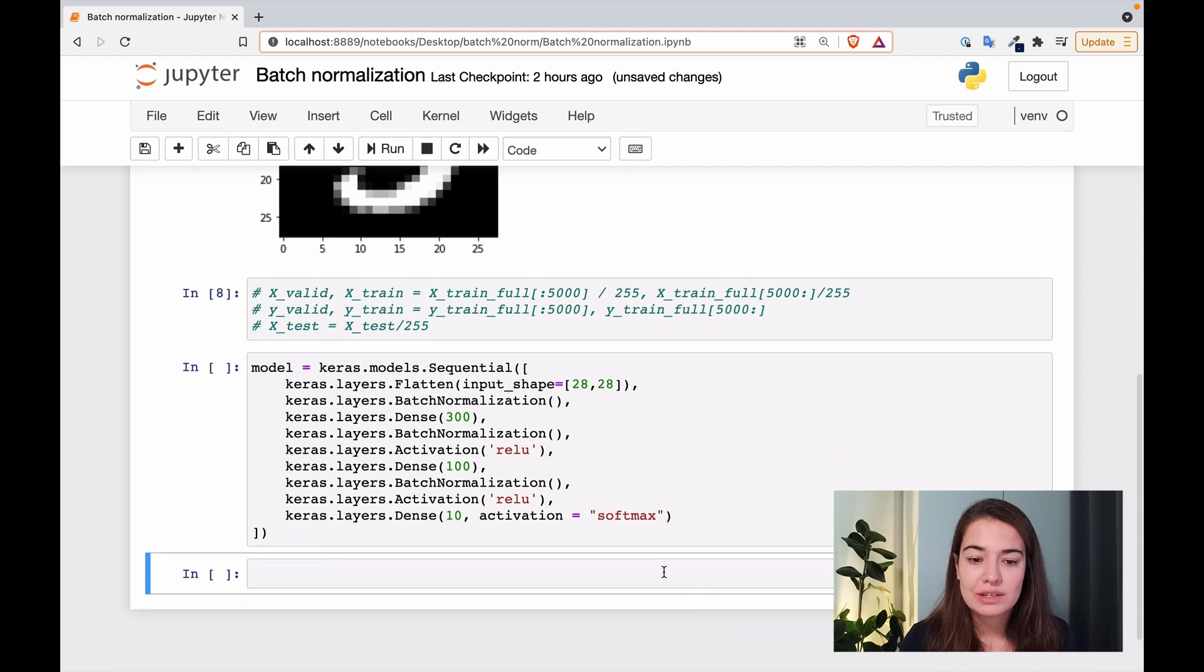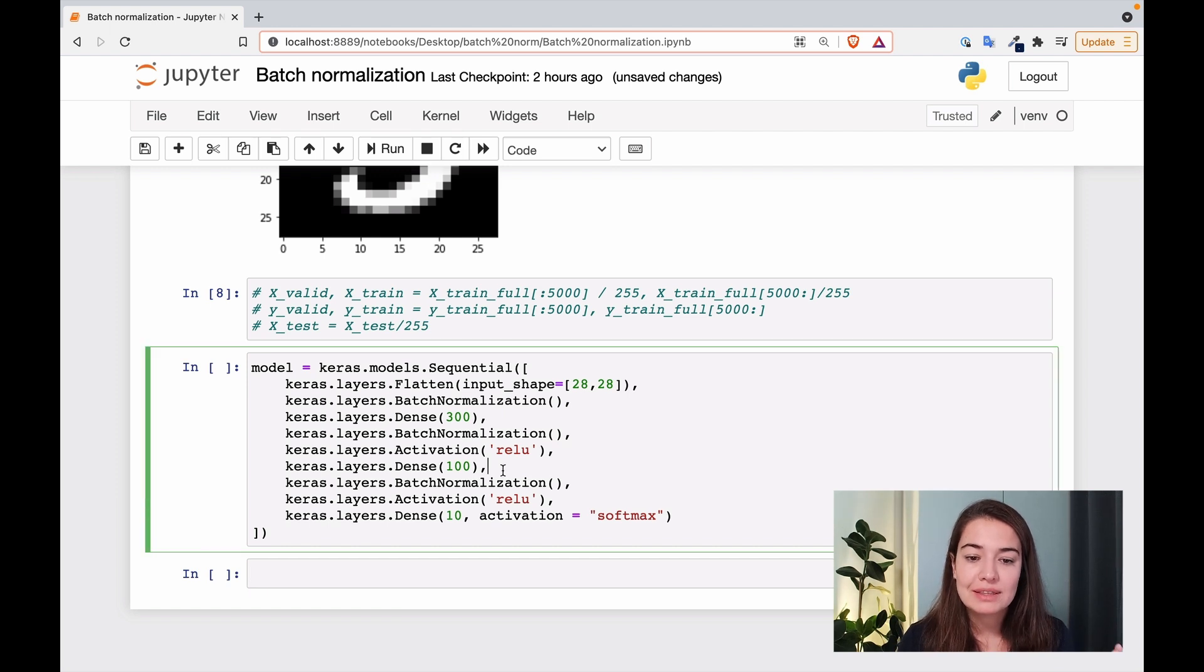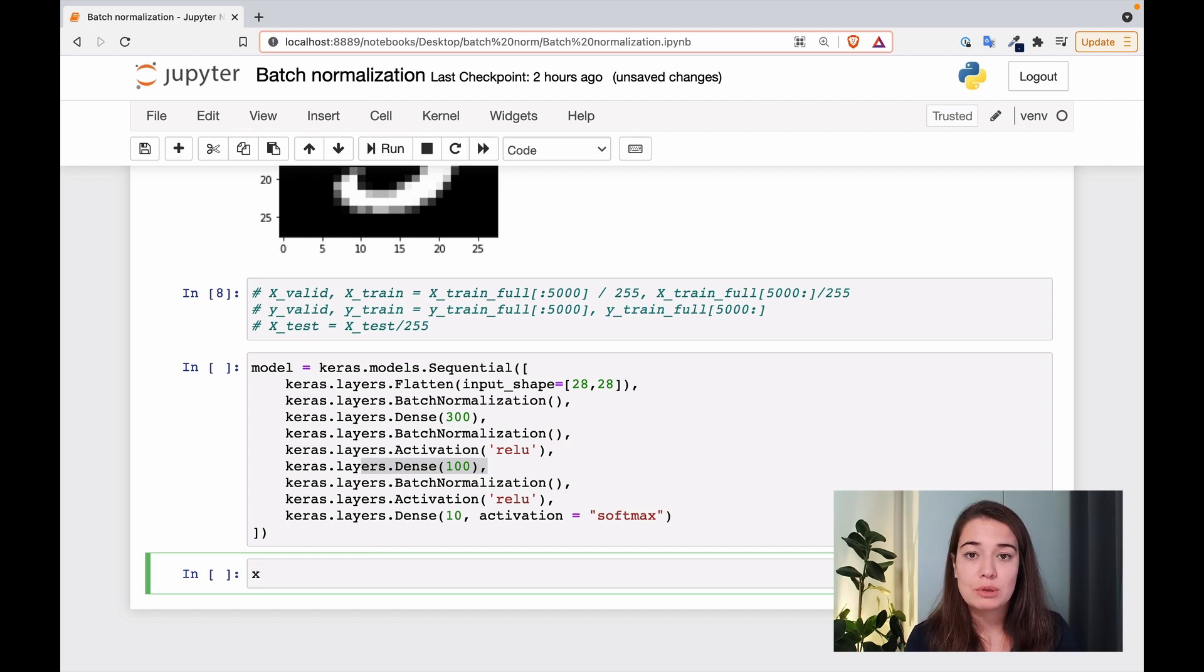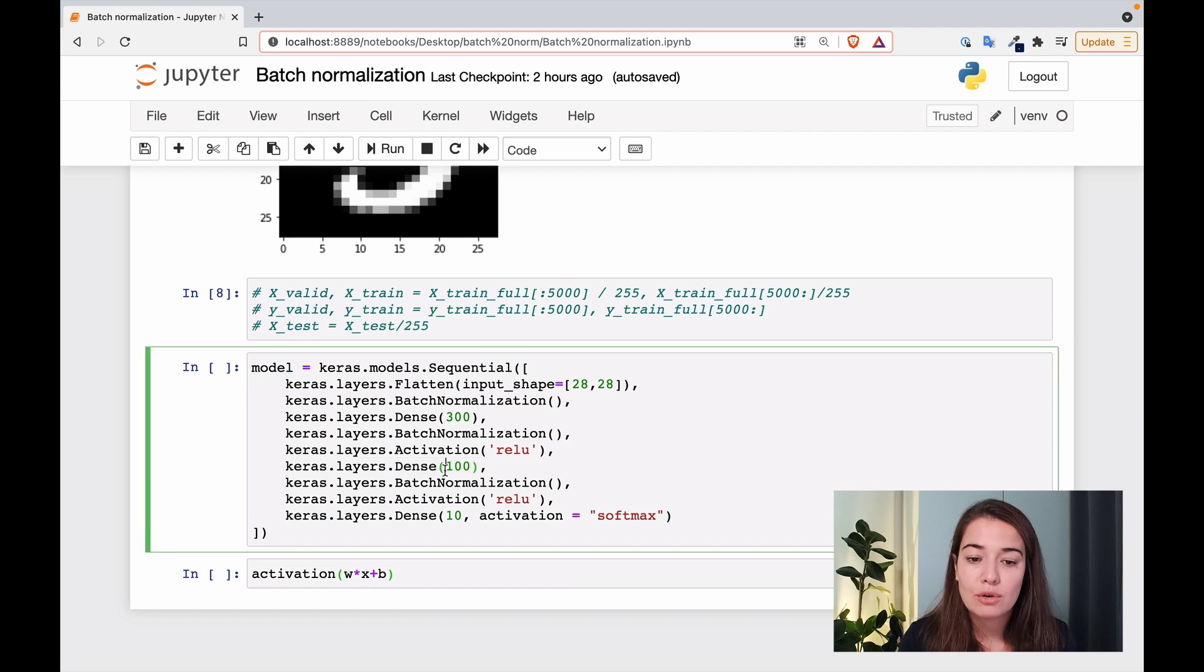But there is one other detail that we should look into here, and that is the usage of bias. So if you remember, what happens in a dense layer or a hidden layer is that we get some sort of input from the previous layer, right? Let's call it x, and we have our weights. So we multiply the input with the weights, and then we add a bias to it. So when we have an activation function also already built in, what we do is we put these values through an activation function, and that is the output of our dense layer.